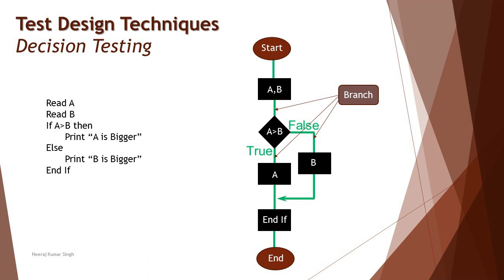Decision coverage is measured differently, just like statement coverage. It is the measure of the percentage of decisions executed by a given number of tests for a fragment of code. At any point in time, if you have a given number of test cases executed, we measure how many decisions were covered by the tests over the total number of decisions. Decision coverage is: number of decisions covered by the tests divided by the total number of decisions in the code, multiplied by 100. For example, if there are eight decisions and your tests cover six of them, you achieve 80% decision coverage.